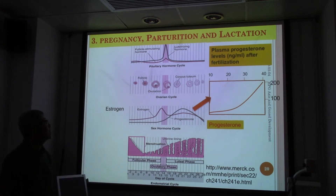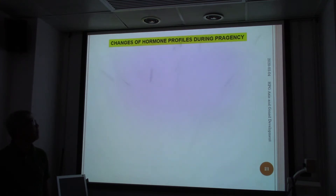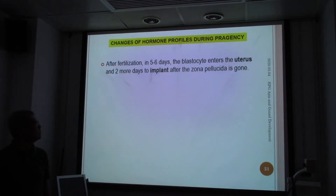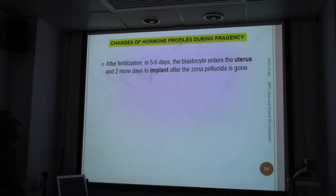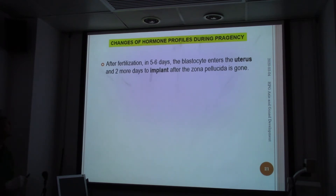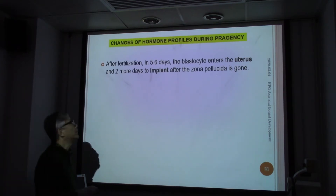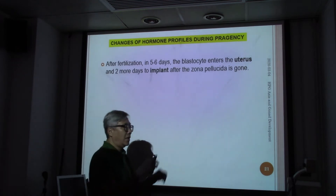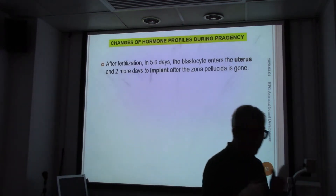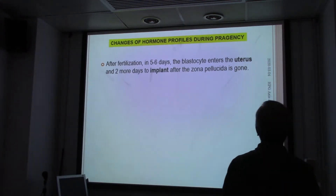This is a very critical step. In step number one, after fertilization within about five to six days, the blastocyst enters the uterus and tries to implant. That would only happen after the zona pellucida — the outside layer of the egg — is gone.